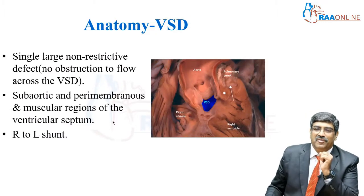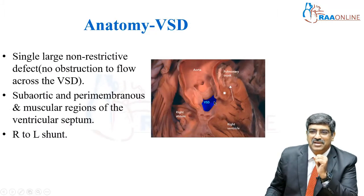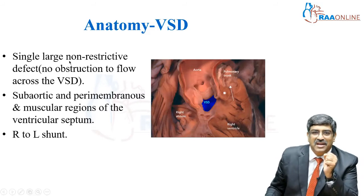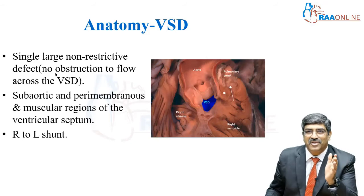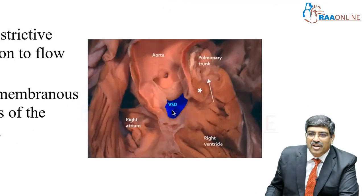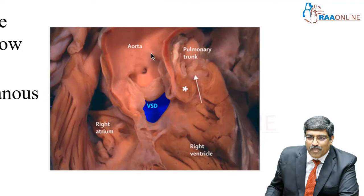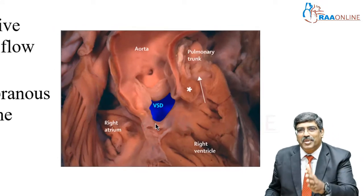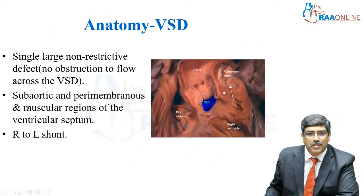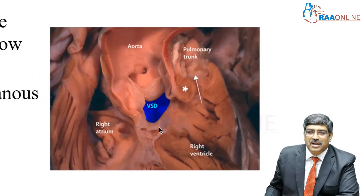Coming to the first component, the VSD. The important adjectives applied to the VSD are: it is single, large, and non-restrictive — meaning there is no obstruction to flow across the VSD. It is a very big VSD. The location is in the subaortic, perimembranous region of the septum. Sometimes it can be located in the muscular part, and it causes a large right-to-left shunt.